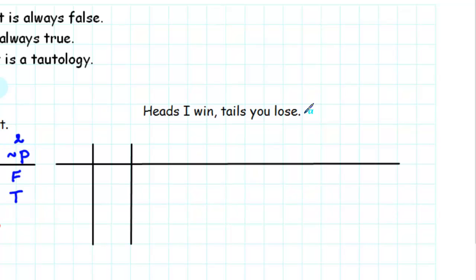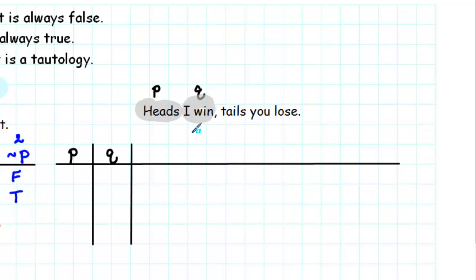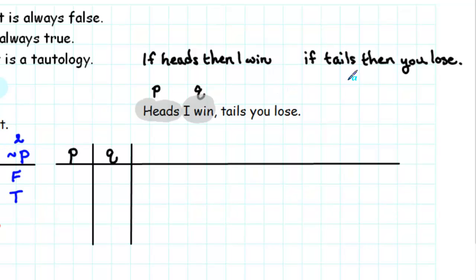What about the statement 'heads I win, tails you lose'? Is this a contradiction, a tautology, an implication, or none of the above? Let's let heads be P and 'I win' be Q. The first part we might rewrite as 'if heads, then I win,' and the second part as 'if tails, then you lose.' The tricky part is how to connect these two together — should we use 'and' or 'or'?